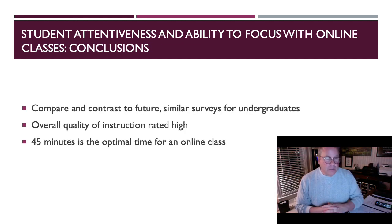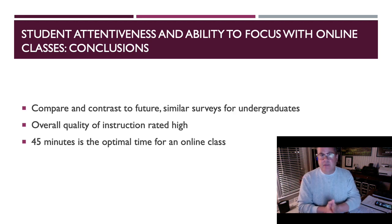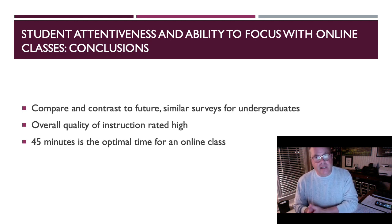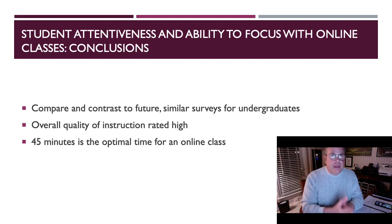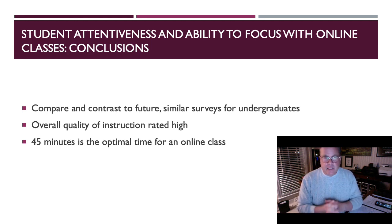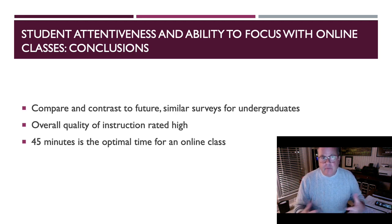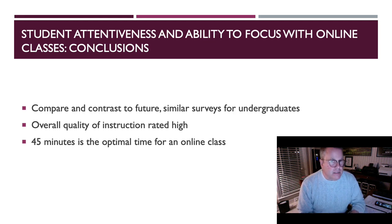Looking at the results and coming to a few conclusions, I will be interested to compare and contrast this survey's results to similar surveys I intend to conduct with first-generation, first- and second-year undergraduate students — examining their experiences and feelings regarding online courses, particularly during the COVID-19 pandemic. For this survey, quality of instruction was rated high. The optimal time averaged 45 minutes, which coincides with my own personal experience teaching online classes to undergraduate students and noticing it was challenging to maintain their attention.